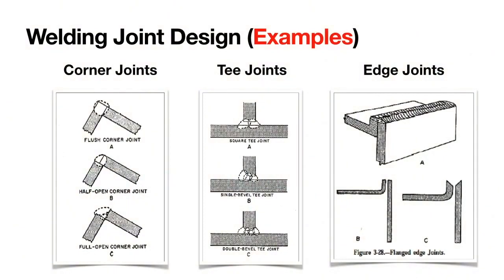Here are some examples for corner joints, T-joints, and edge joints. Edge joints are mainly used to join edges of sheet metals and are used to reinforce flanges of I-beams and mufflers. This was all about welding joint design, joint types, and edge preparation. Next we are going to move to welding positions.